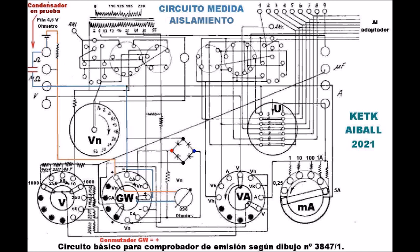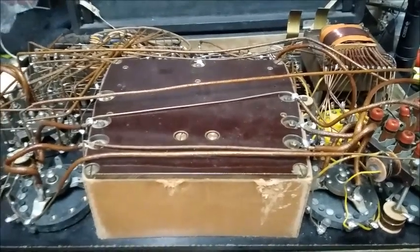Con la salvedad de que aquí, al conectar el condensador, si tiene bastante capacidad, habrá que esperarse hasta que se cargue completamente para verificar que la aguja pase a marcar cero. Y si no marca cero, significará que el condensador tiene conducción entre placas; tanto mayor será la conducción como mayor sea el valor de lectura en el instrumento.